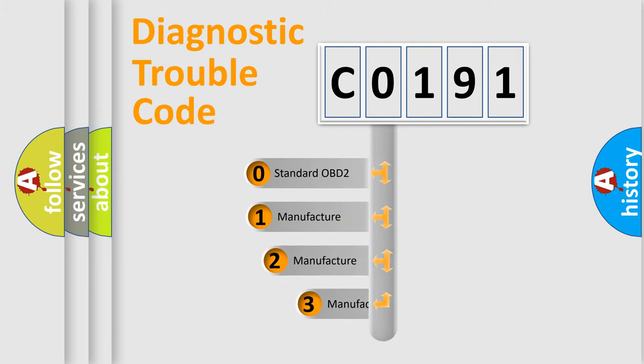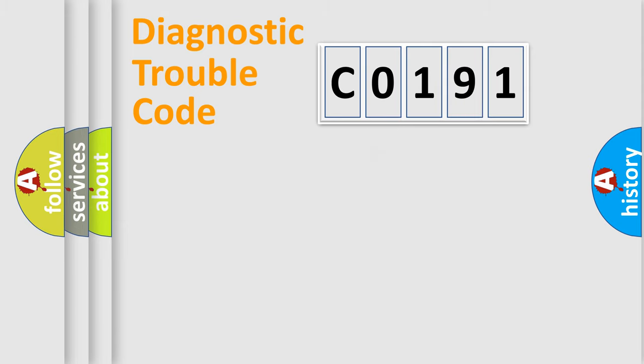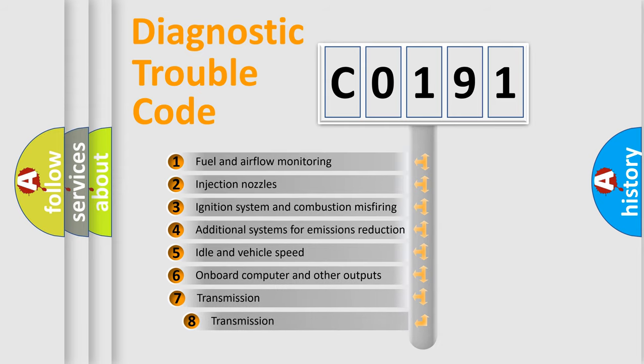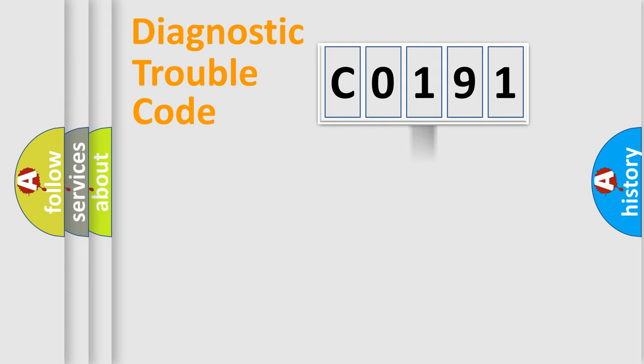If the second character is expressed as 0, it is a standardized error. In the case of numbers 1, 2, 3, it is a manufacturer-specific error. The third character specifies a subset of errors. The distribution shown is valid only for the standardized DTC code.